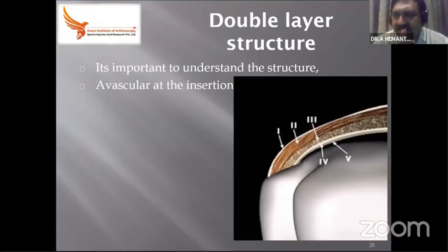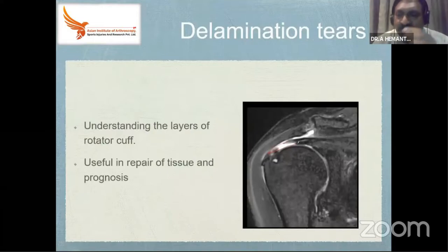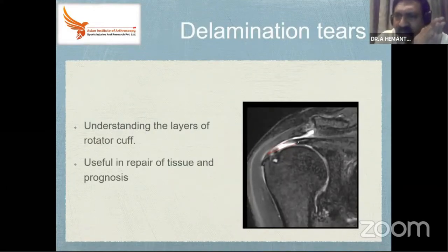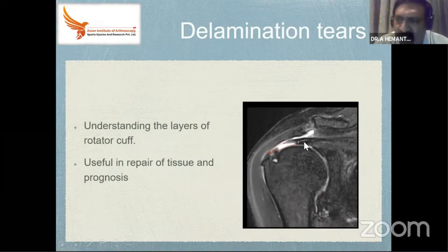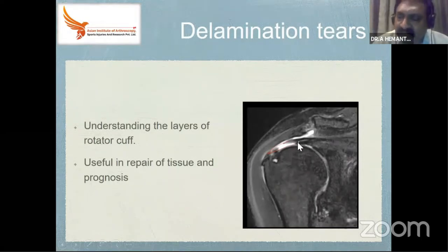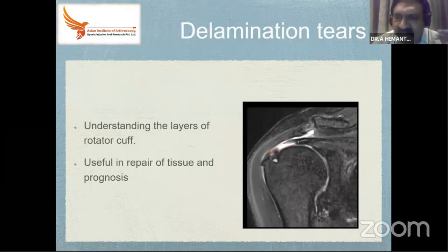A double layer of the cuff is also important. When you see a cuff tear, you should not only identify the tear but also know the pattern of the tear. There are delamination tears — two layers: the superficial layer and the deep layer — which are classically seen. MRI gives enough information; the edges can be seen just like in an X-ray where round edges mean an older injury.